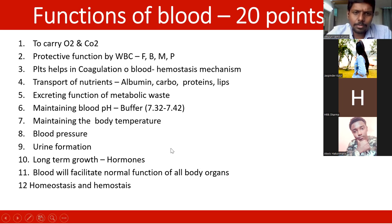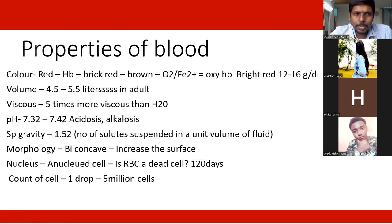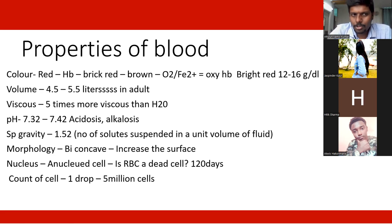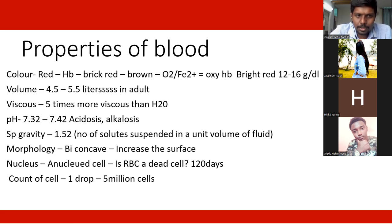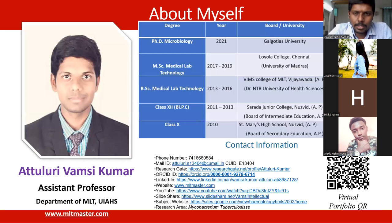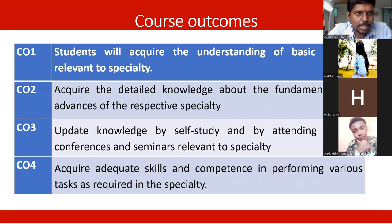Coming to the properties of blood: it is red in color due to hemoglobin. The volume in an adult is around 4.5 to 5.5 liters. Blood is five times more viscous than water. The pH is around 7.3 to 7.42. The specific gravity is 1.052. The morphology of a red blood cell is biconcave shape, there is no nucleus, and the normal RBC count is around 5.5 million cells per cubic millimeter of blood.